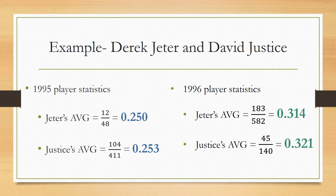I have two years of statistics for two players: Derek Jeter and David Justice. On the left are the 1995 statistics. Looking at the numbers in blue, Derek Jeter's batting average in 1995 was .250, and David Justice's was .253 — so David Justice had the better batting average that year. Looking at the 1996 statistics in green, Derek Jeter's batting average was .314 and David Justice's was .321 — so David Justice had the better batting average in 1996 as well.